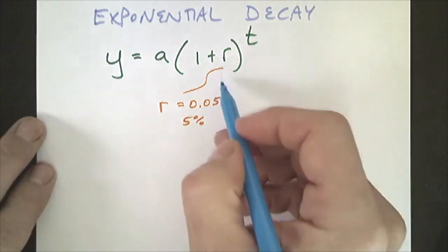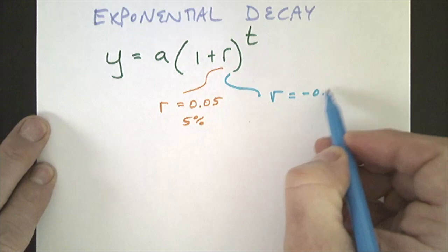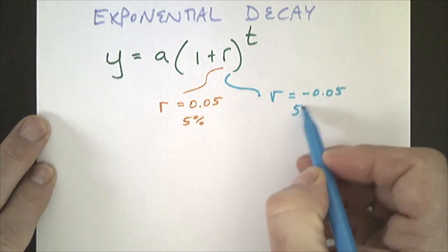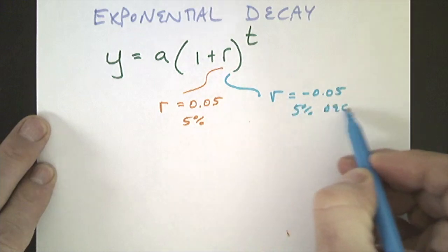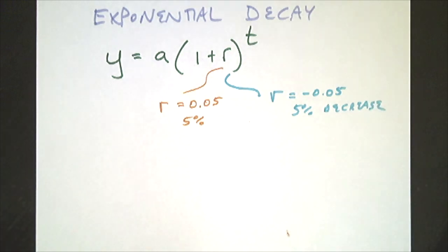For our example, we're going to take an R value equal to negative 0.05. That would be a 5% decrease. That would be a decay.